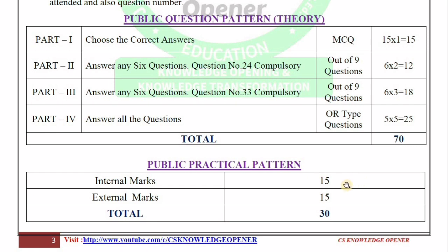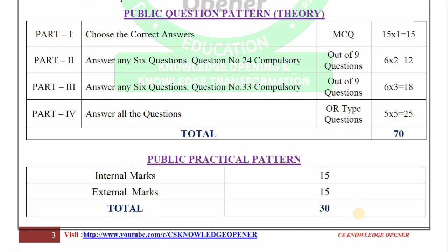Your teachers give 15 marks internally. In the external, you will finish coding and output at the school. Total is 30 marks. To pass, you need 15 marks. If you score a little in the practical plus theory, you can score high marks with little effort.